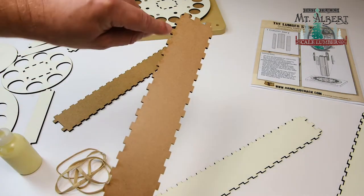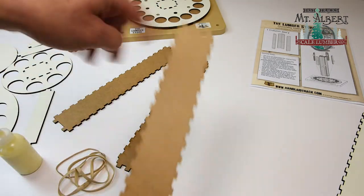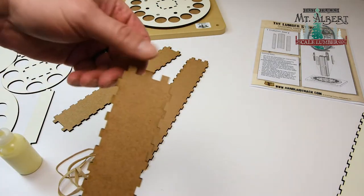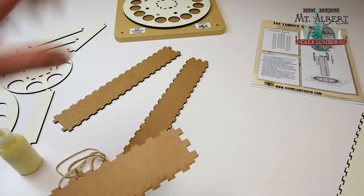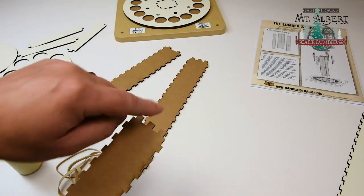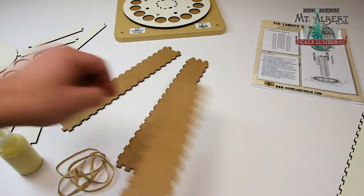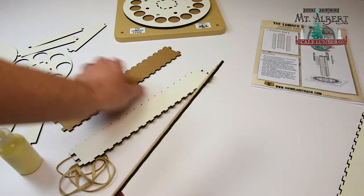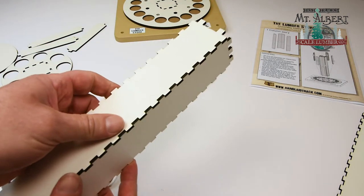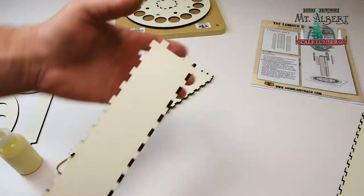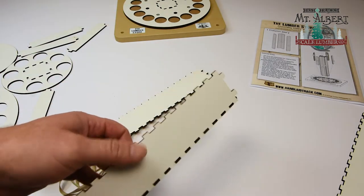We're just going to run a bead of glue along all these tabs on all four parts. Here, here, here and here on every one. I'm not going to put any glue up on these tabs, not yet, that's to glue it in place into the base later or any on the bottom. So, we just want them on here and then we're going to assemble them like this. One, two, three, four and we'll put a couple of rubber bands around it to hold everything in place.